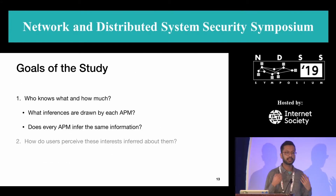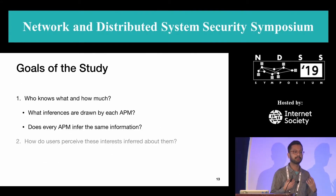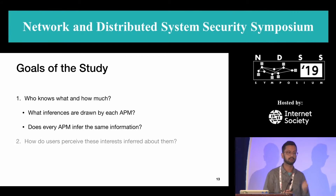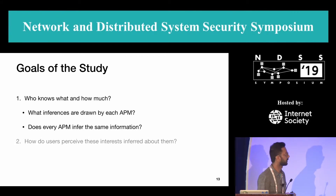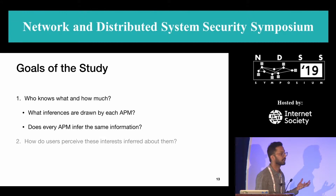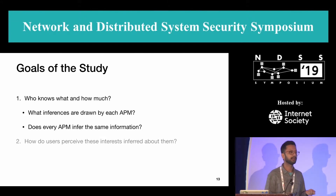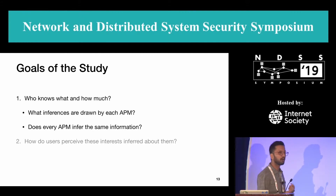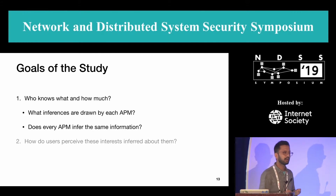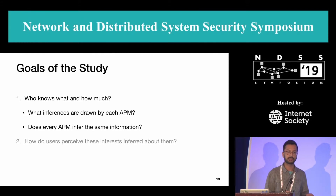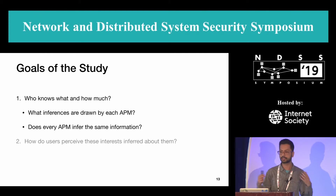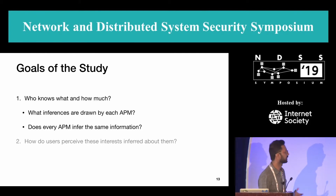Now that we have this data, we can go back to our goals. The first goal was: who knows what and how much? In particular we want to know what inferences are drawn by each APM, and also whether each APM infers the same information about the user or different information for the same user.